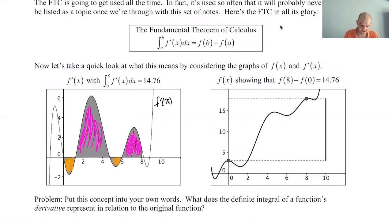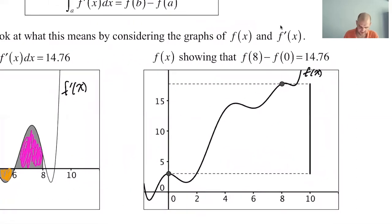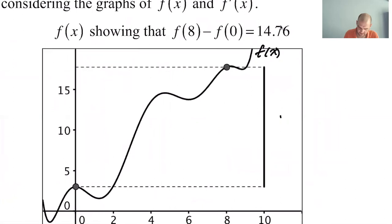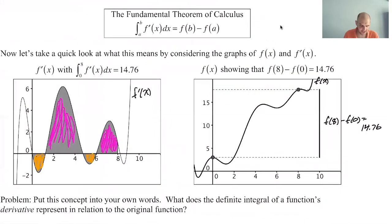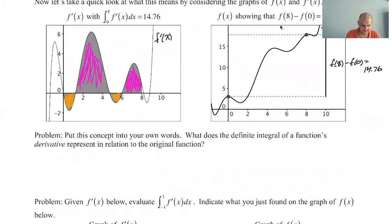So in this picture, we have the graph of f(x), not f'. Because it's the graph of f(x), the fundamental theorem is telling us it should just be where we end up, which is f(8), minus where we start, which is f(0). So this little bar here represents f(8) minus f(0), which is 14.76. Sometimes it's easier to do geometry on this graph, sometimes it's easier to find an antiderivative and use the fundamental theorem.